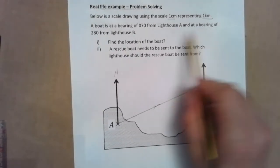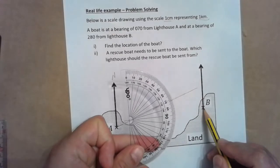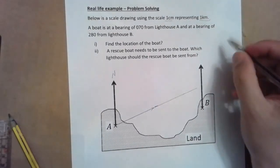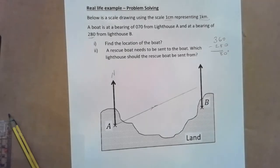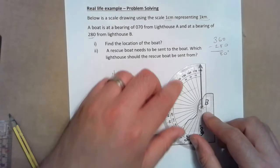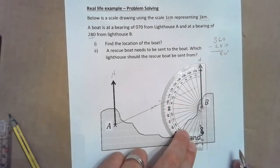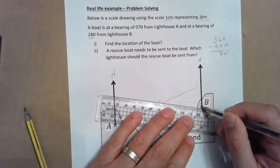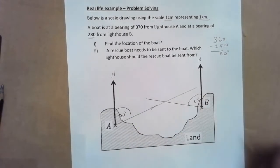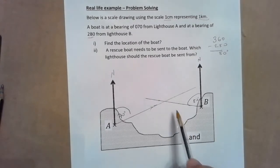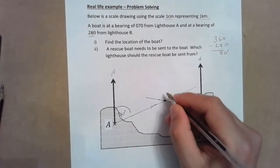We also know it's at a bearing of 280 from lighthouse B. Since I can't measure 280 directly, I'll go anti-clockwise: 360 minus 280 equals 80 degrees anti-clockwise. So from lighthouse B, north anti-clockwise 80 degrees gives a line down here. This is 70 degrees and this is 80 degrees, and the boat must be where these two lines meet.